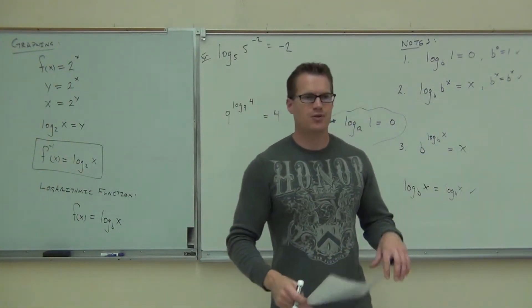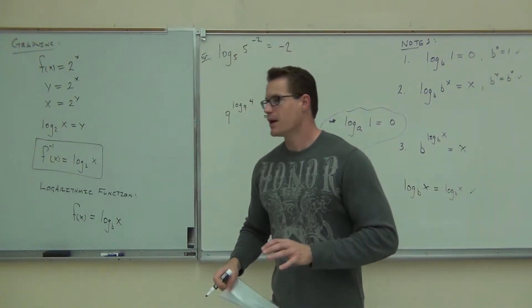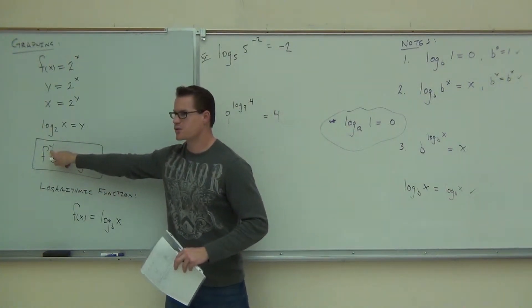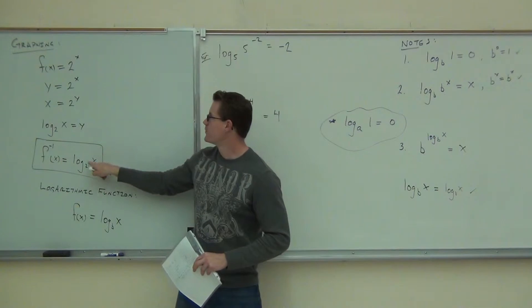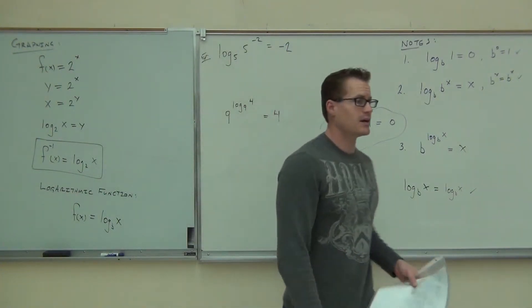Now, what's very interesting is that every logarithmic function comes from an exponential. It's an inverse of some exponential. Just like this logarithmic function, look at that. That's an inverse, right? It's an inverse of 2 to the x. It's the inverse of that thing. That's how you get it, it's an inverse.